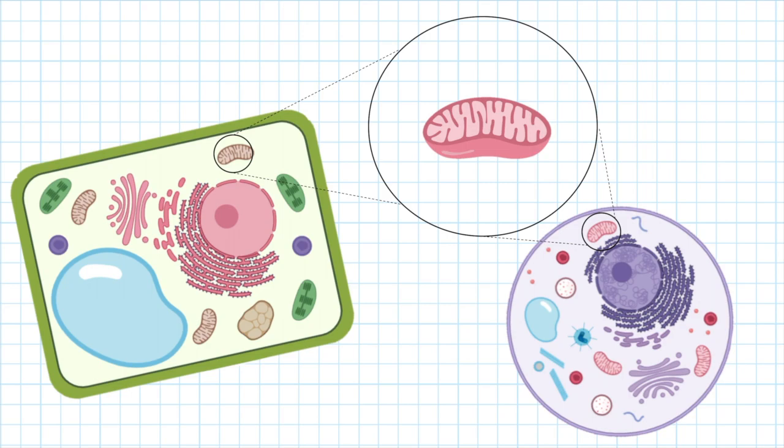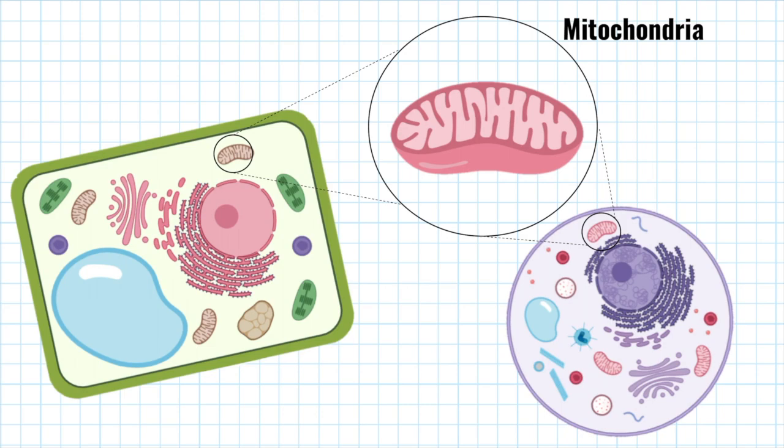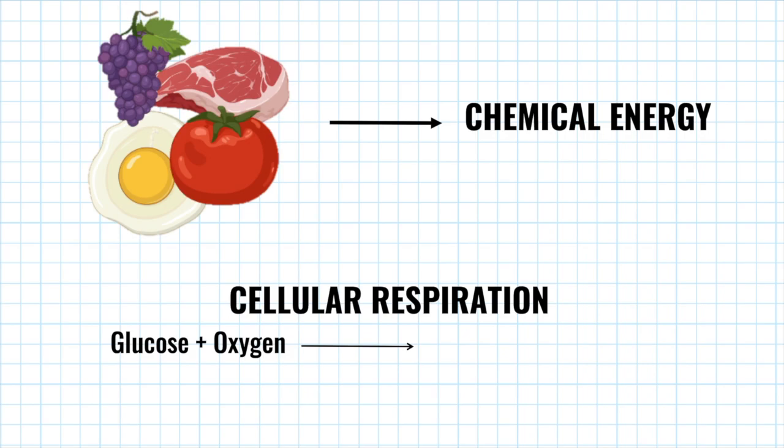Mitochondria are examples of a type of organelle which are responsible for generating chemical energy needed to power the cell's biochemical reactions. The chemical energy is obtained from organic molecules which come from the food that we eat through the process of cellular respiration.